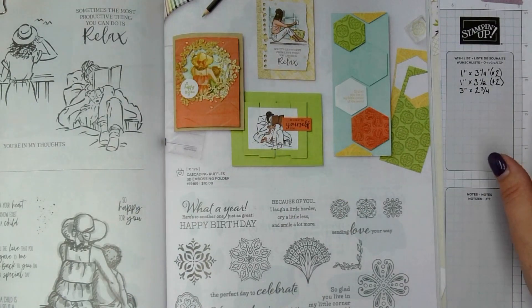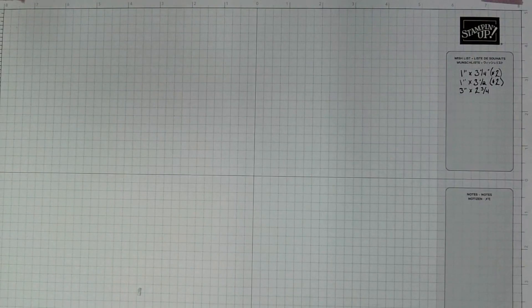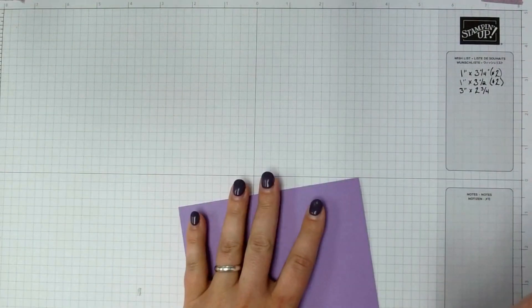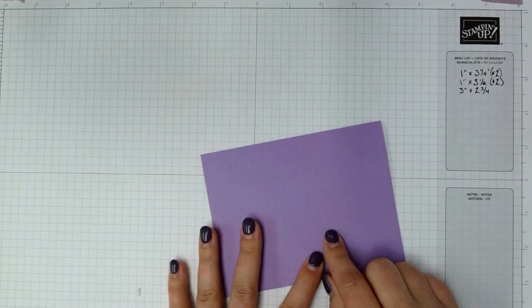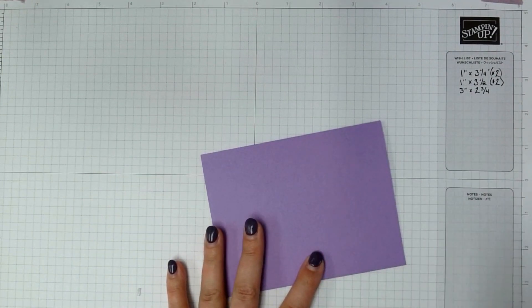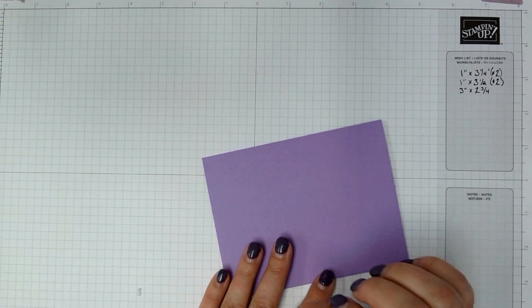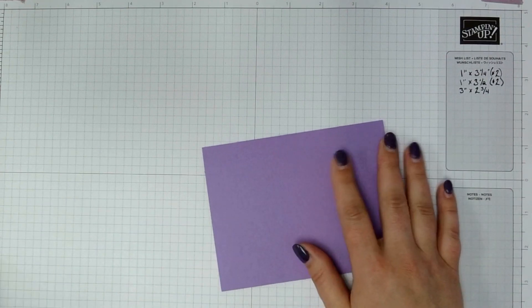So my card that I'm going to do, I'm going to start with a Highland Heather base. I have my measurements written down here and there will also be on my blog. So I'll link to that in the description. But I don't have all the measurements, just the little pieces. So this is Highland Heather. It's cut eight and a half inches by five and a half inches and then I've scored it at four and a quarter inches.